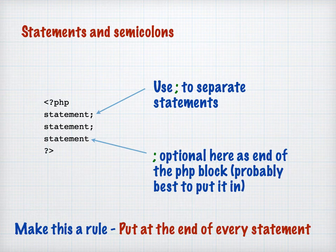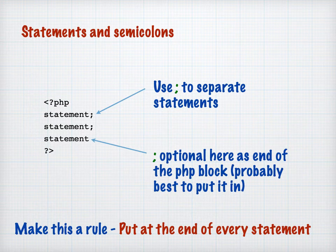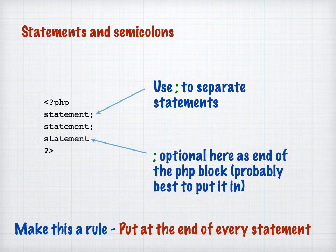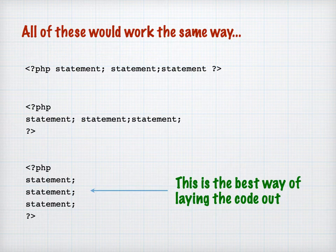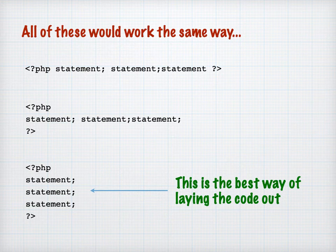As I've indicated, we use a semicolon to separate the statements. The final one — theoretically you don't have to put a semicolon on it, but my advice is always put the semicolons in. What can happen is you add another statement, forget you haven't got a semicolon at the end of the previous line, and then you get an error message. The tip is: put one statement on every line and make sure you have semicolons at the end. You can lay them out in any way you want, but laying them out line after line is my preferred way — you'll find it's easier to read when you're trying to find out what's going wrong.